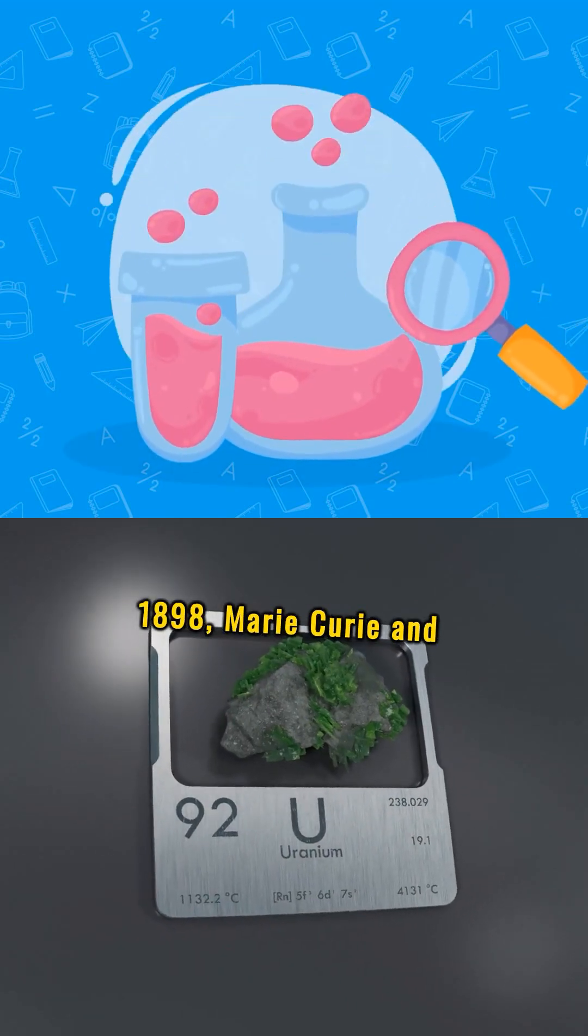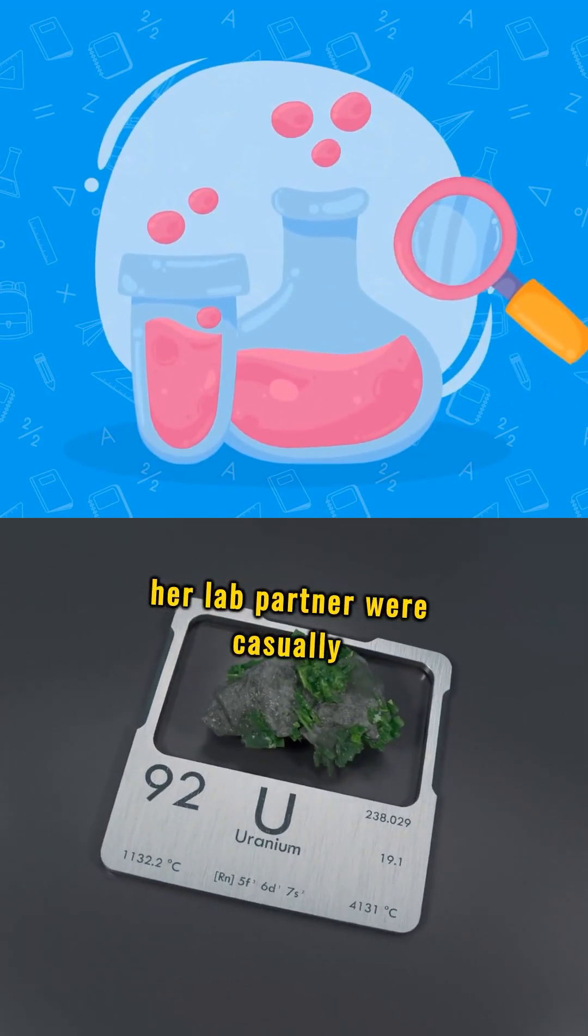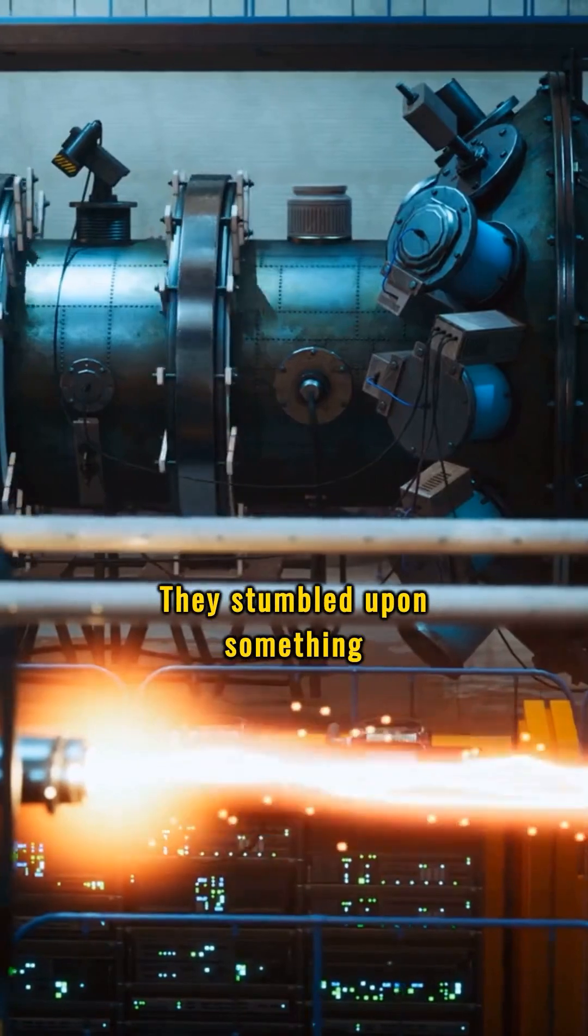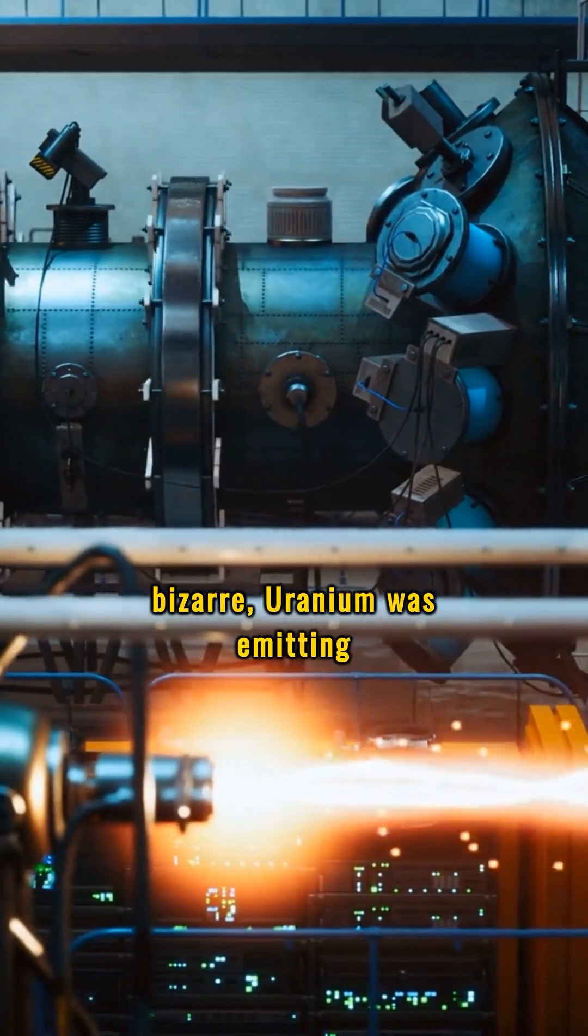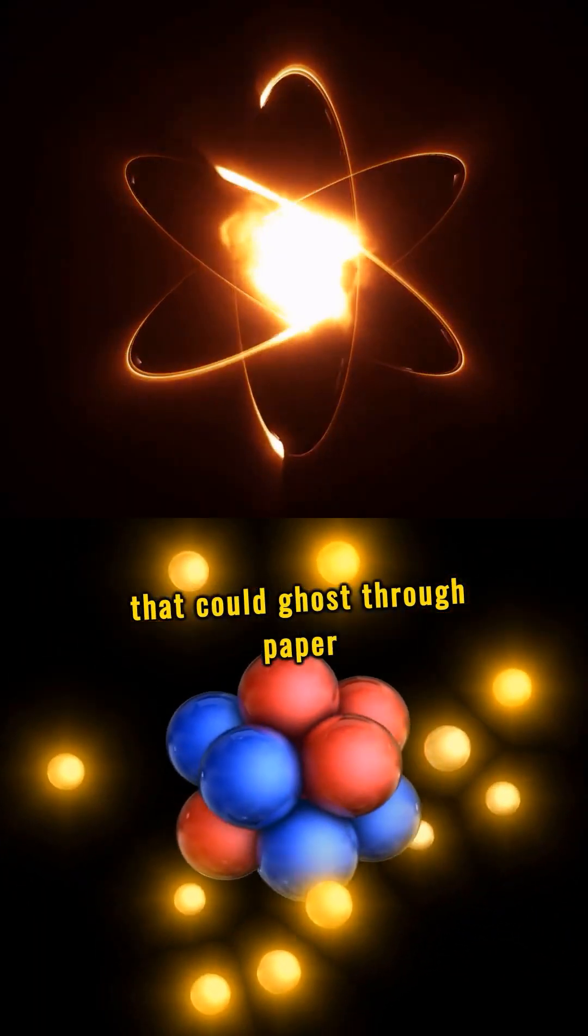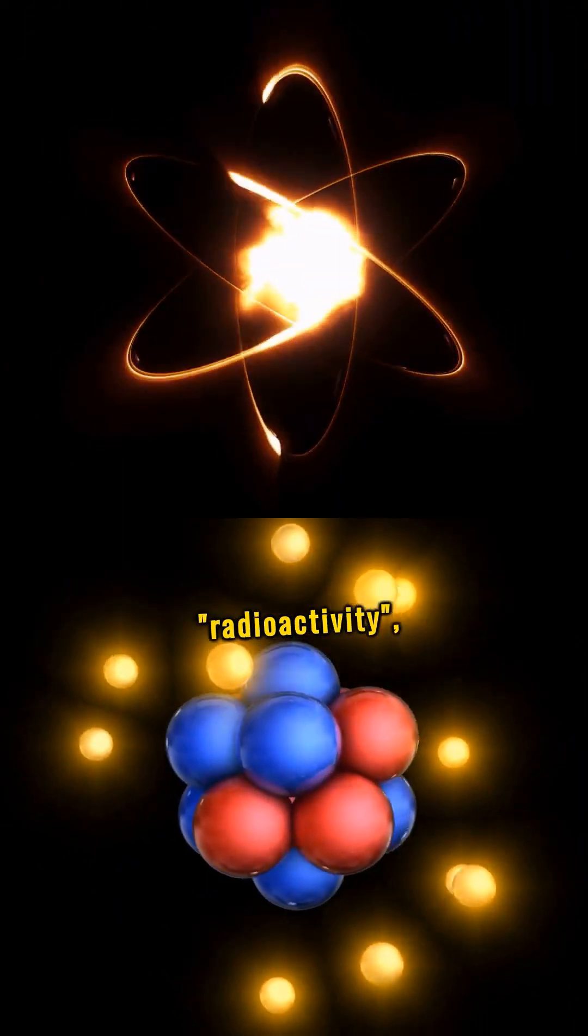Let's time travel back to 1898. Marie Curie and her lab partner were casually messing around with uranium. They stumbled upon something bizarre. Uranium was emitting energy that could ghost through paper and metal. They called it radioactivity.